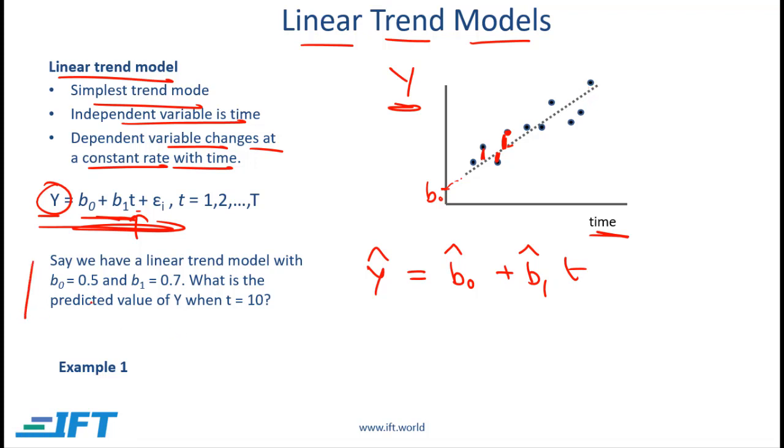If we have this simple example where b₀ is 0.5 and b₁ is 0.7, our equation becomes estimated value of y is equal to 0.5 plus 0.7 times t, and if t is 10 we simply have 10 over here. So the estimated value of y which is actually a point on this straight line will be 0.5 plus 7 which is 7.5. Now if you have time you can work through example 1 which illustrates the same concept using some real data.